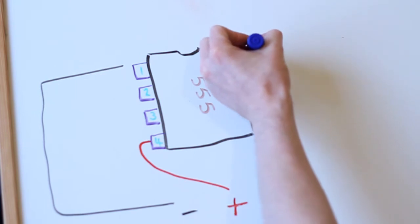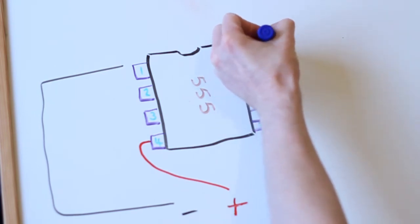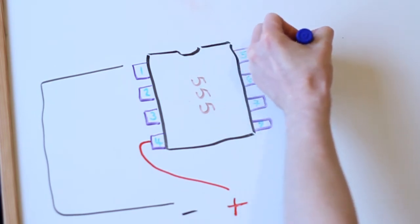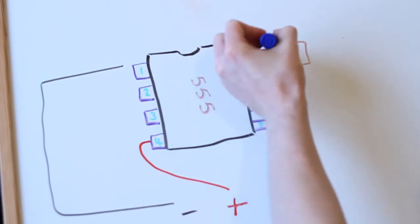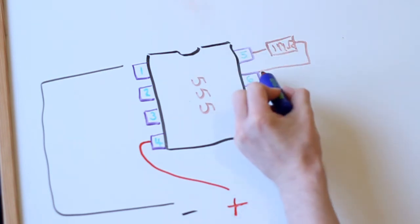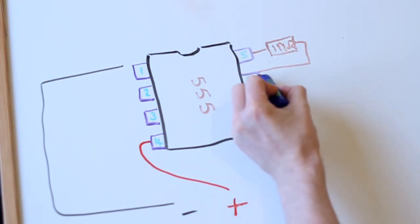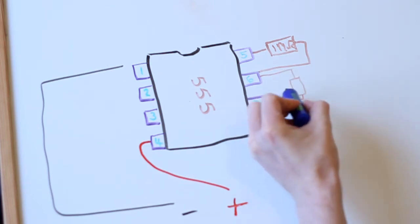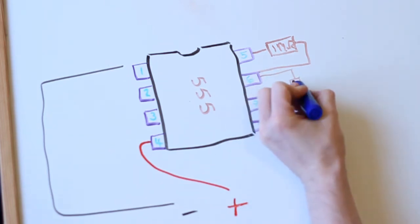Now, we need two resistors, one resistor here, and that's going to go to that pin there. This is a one megaohm resistor, and then we need another one from here, going to here, and that's the same, so that's another megaohm.